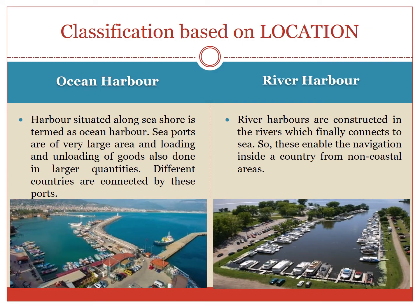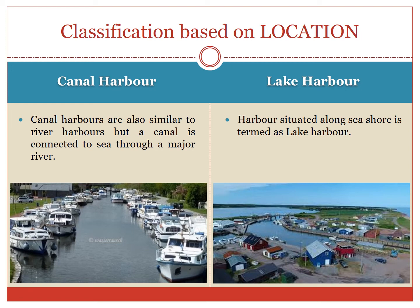Classification based on location: the first is the ocean harbour — a harbour situated along the seashore. Second is the river harbour — harbours constructed in rivers which finally connect to the sea, forming a navigation route inside a country for non-coastal areas. Third is the canal harbour, similar to the river harbour but where a canal is connected to the sea through a major river. Last is the lake harbour, situated along the lakeshores.